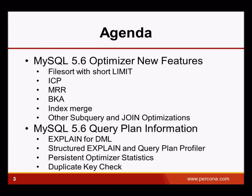This is the agenda for today. It will be divided into two parts. The first and longer part will discuss all these features and acronyms we should be getting accustomed to, like ICP, MRR, and BKA. On the last part of this webinar, we will have a look at some other improvements — not about the query optimizer itself, but that will allow us to profile what the query optimizer is doing, and some extra features that make it easier to work with the 5.6 optimizer.